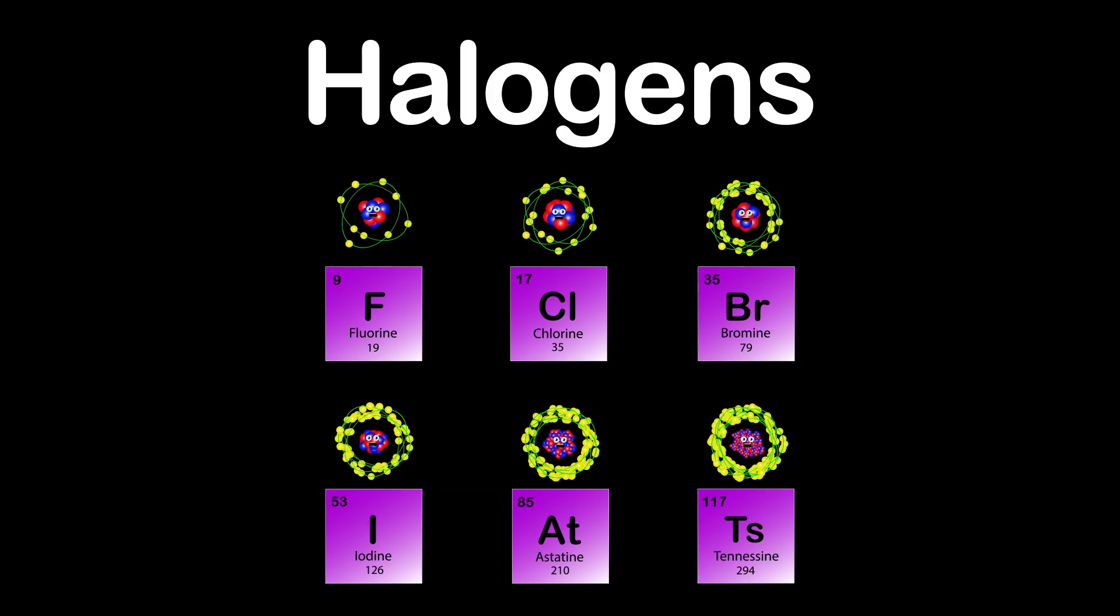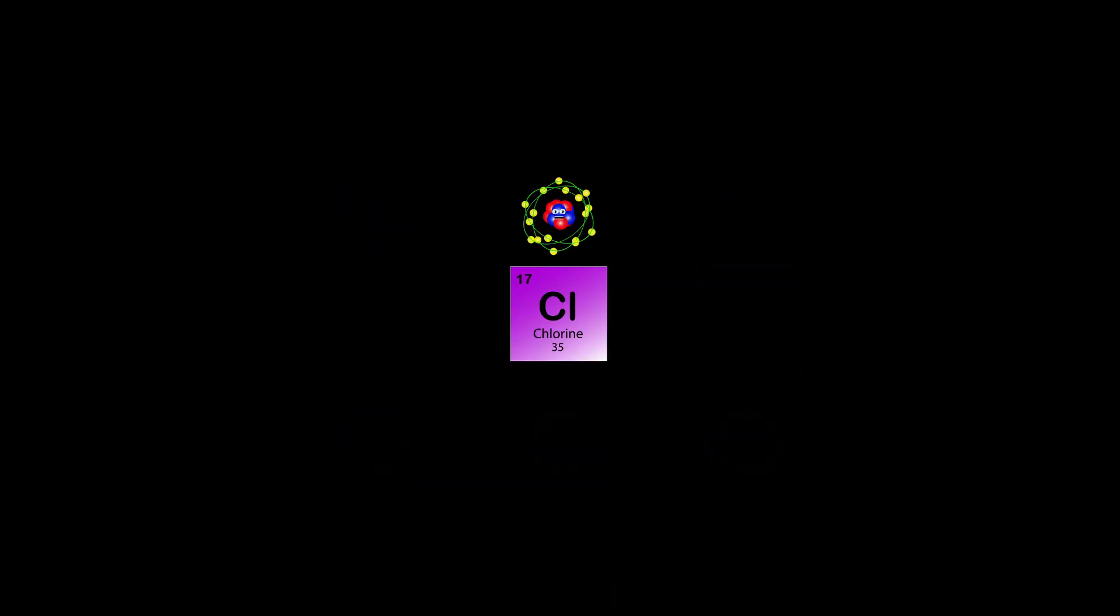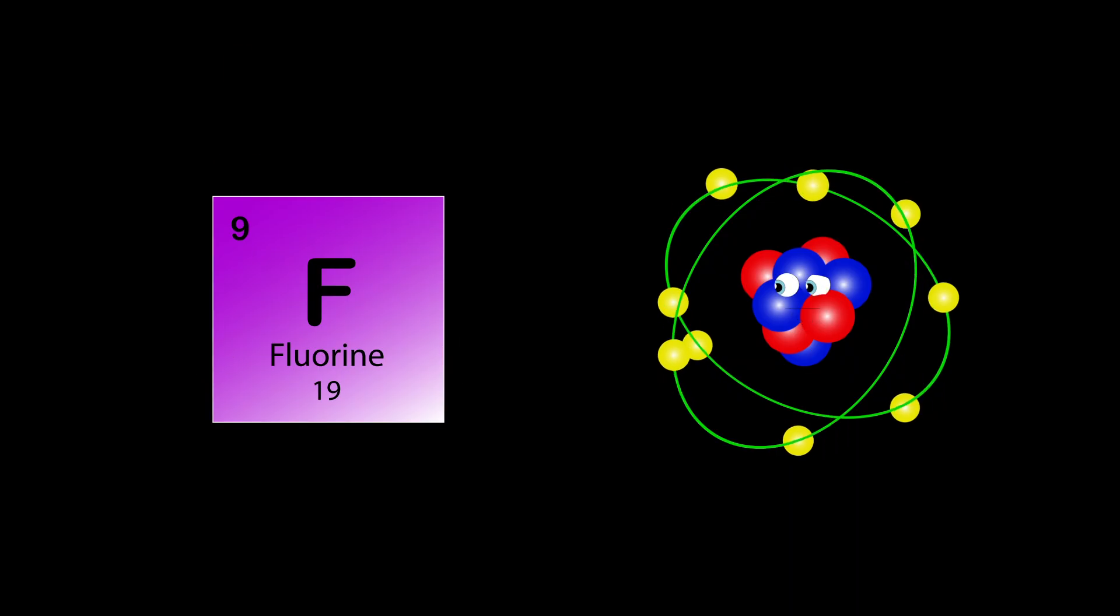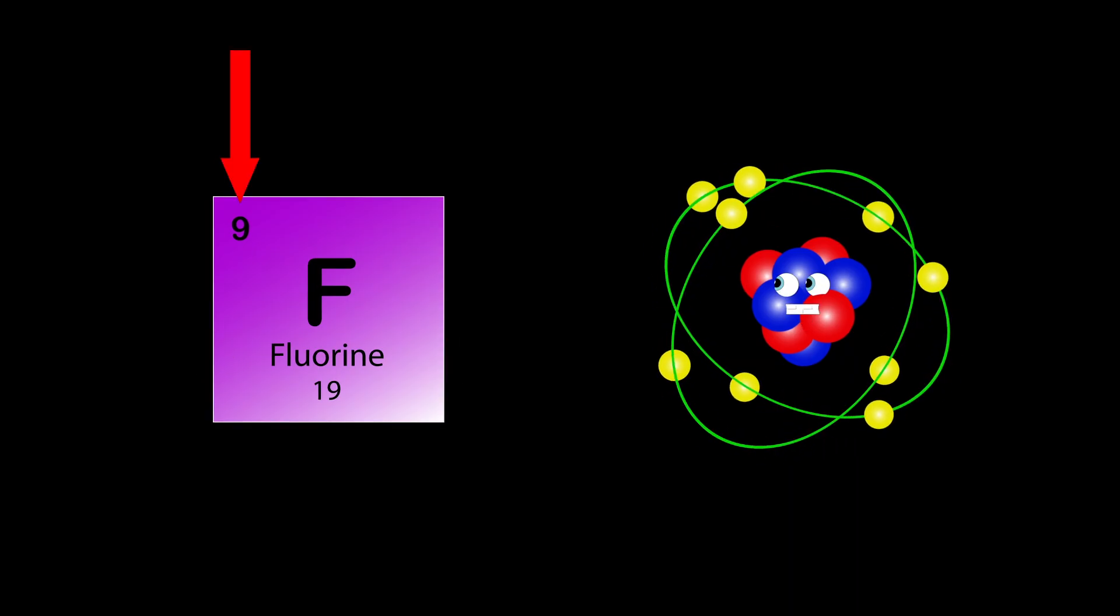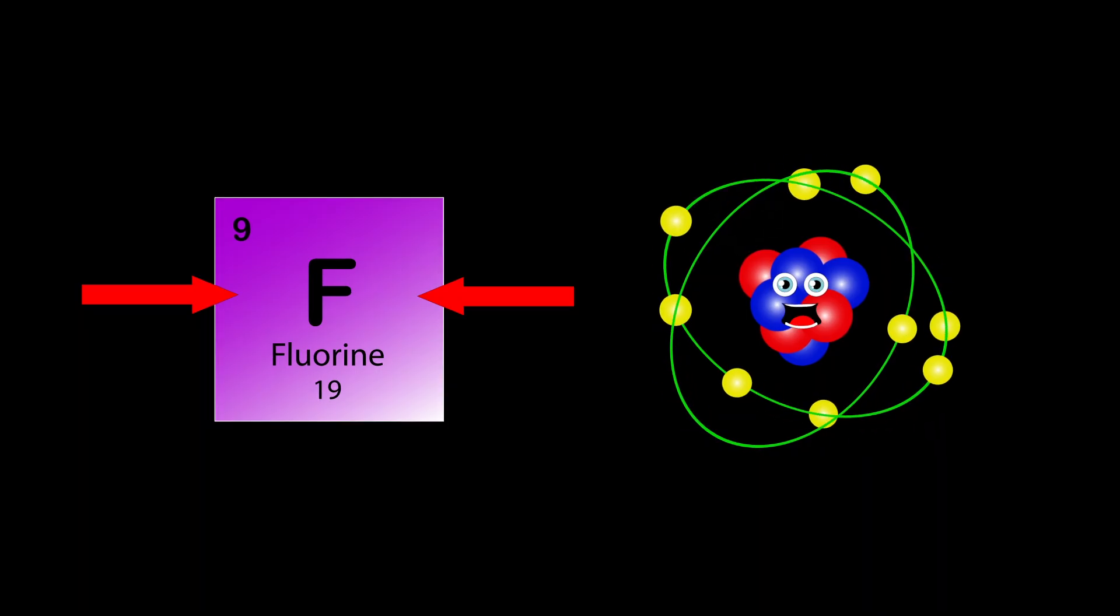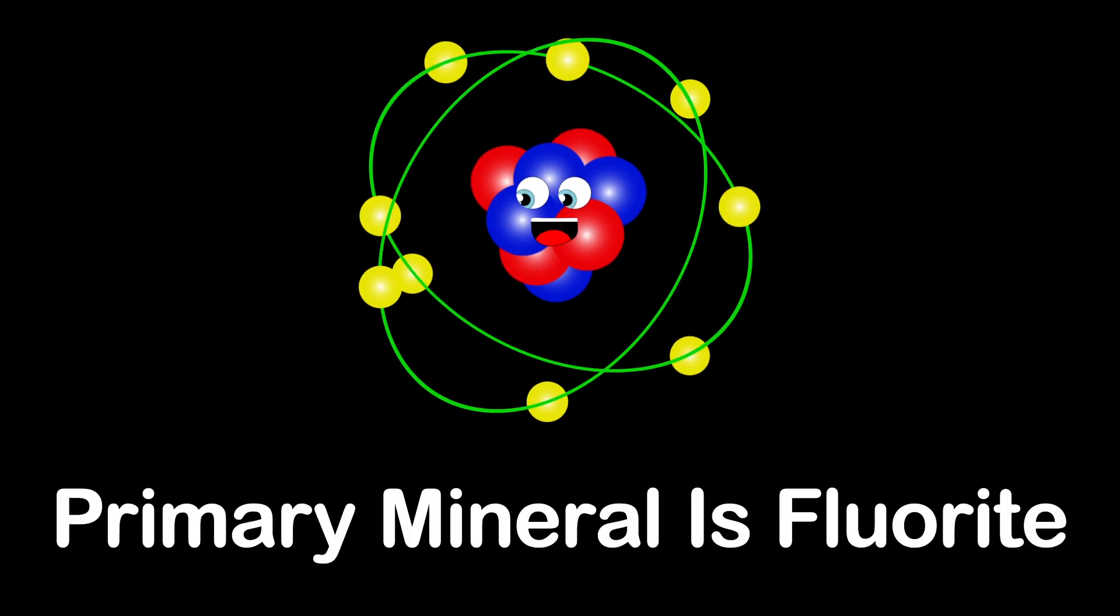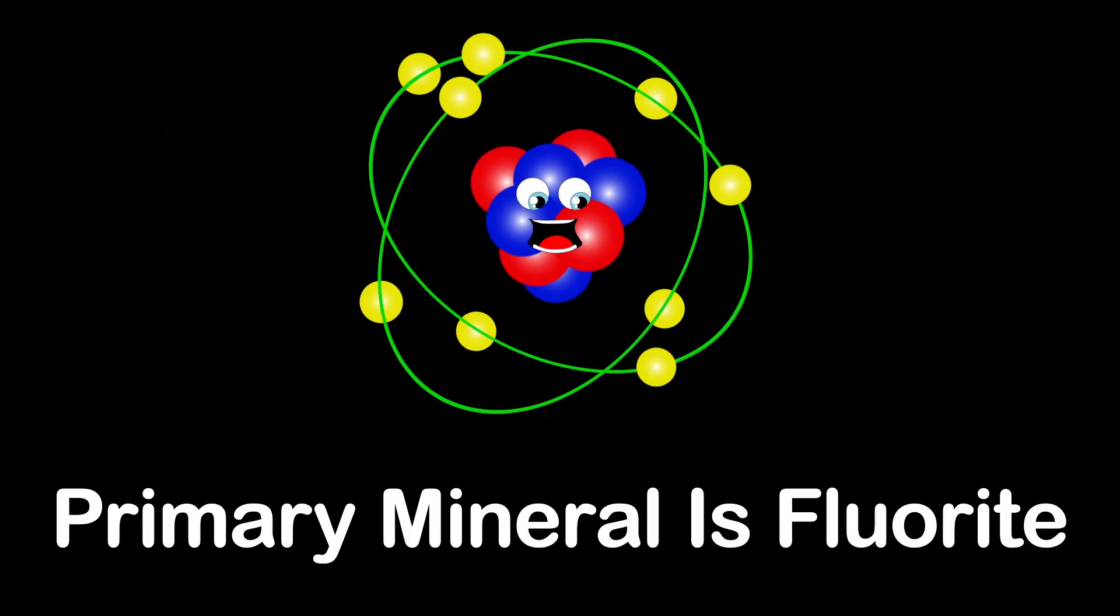Time to learn ladies and gents. Our names are Fluorine, Chlorine, Bromine, Iodine, Astatine, and Tennessine. My name is Fluorine, my atomic number is 9, atomic mass is 19, my symbol's F and that's just fine. I am the lightest of all of the halogens. My primary mineral is fluorite, that's how I got my name.